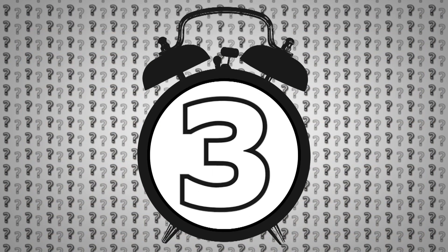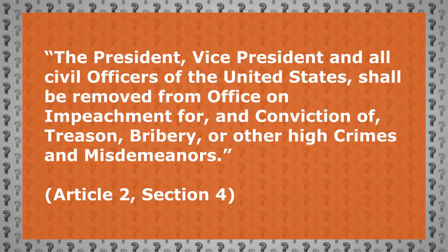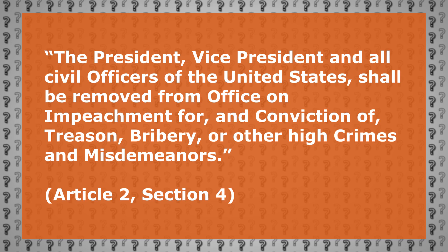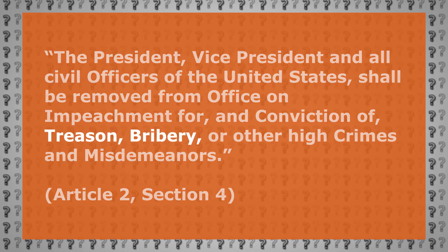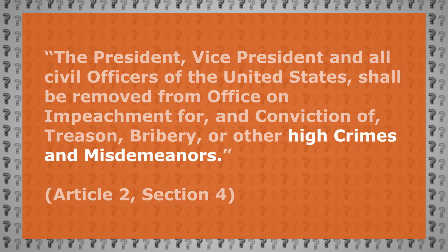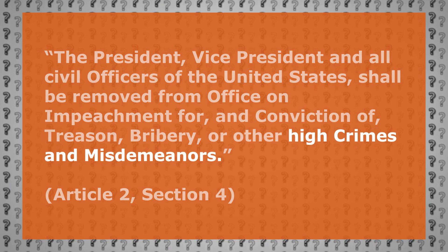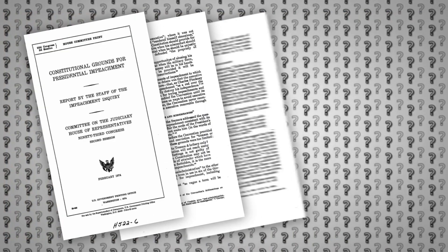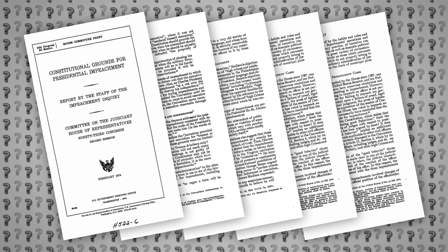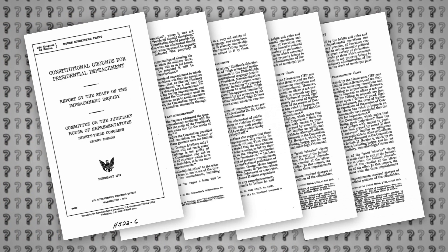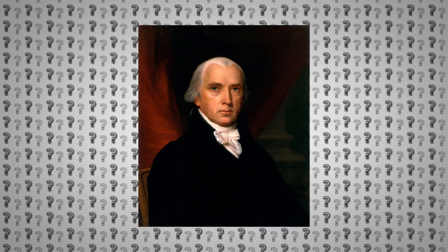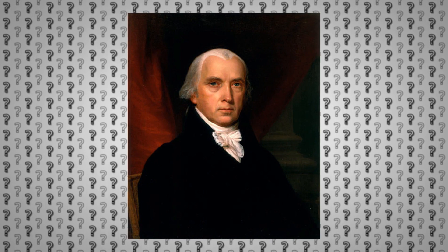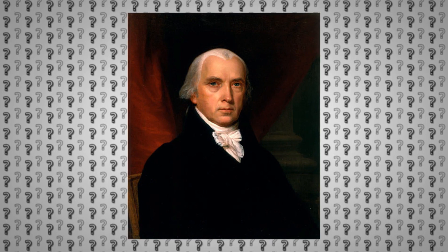Number three: a president and other officials can be removed from office when they are impeached for and convicted of treason, bribery, or other high crimes and misdemeanors — Article 2 Section 4. While treason and bribery are fairly clear, 'high crimes and misdemeanors' is a rather vague phrase. Perhaps the most influential document in interpreting what exactly qualifies is a 1974 report by the House Judiciary Committee called 'Constitutional Grounds for a Presidential Impeachment.' This document cites founding fathers, especially Madison, in arguing that these do not need to be illegal acts, but a broader scope of misdeeds that might undermine US interests or the Constitution.